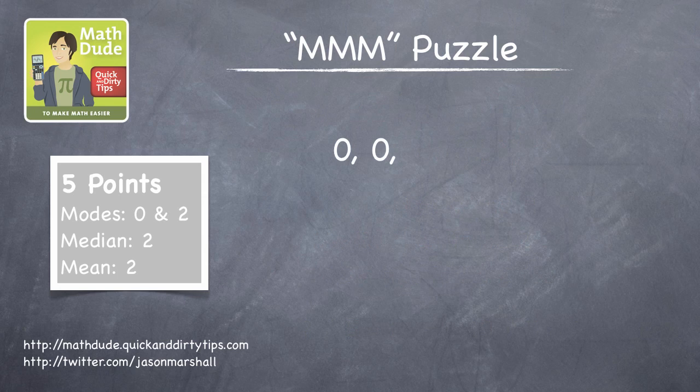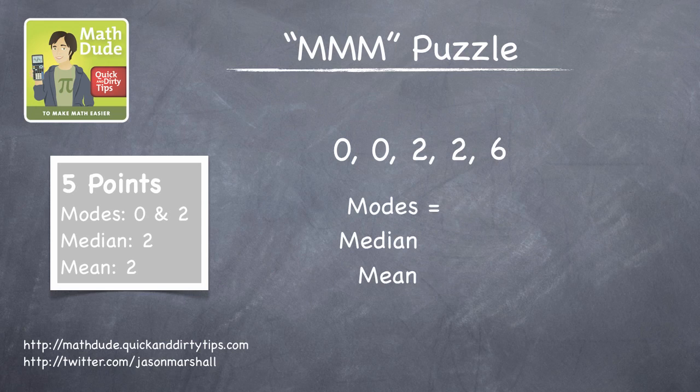And that's it. The final list of numbers is 0, 0, 2, 2, 6.